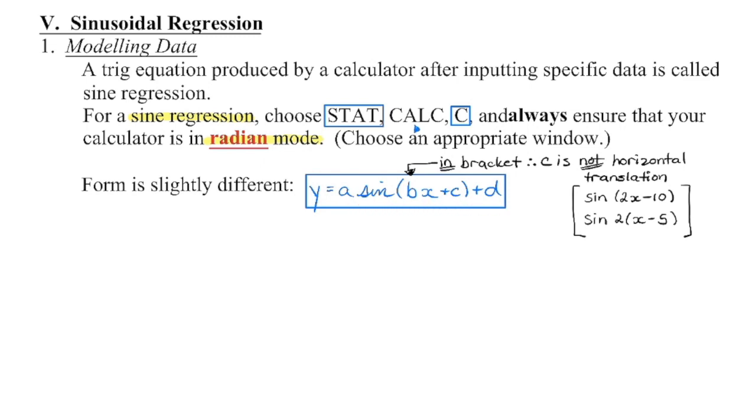The form that the equation is going to be given to you in is going to look like this. You're going to notice it's different than the one we've been working with already in the fact that this B is now inside of the bracket. As soon as the B is inside the bracket, C is no longer going to be the horizontal translation if we just take this value as is. If we factor out the B value, we can get the horizontal translation, but we can't just pull that value with the regression.